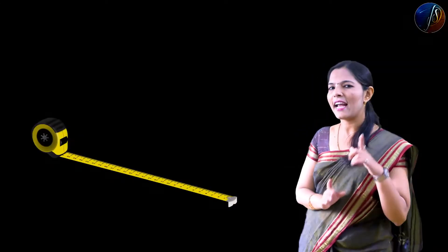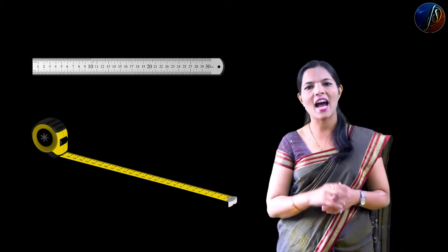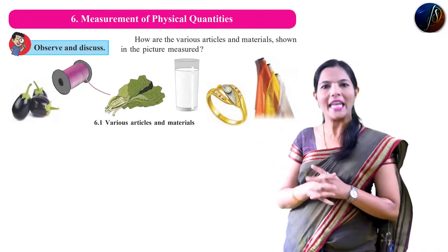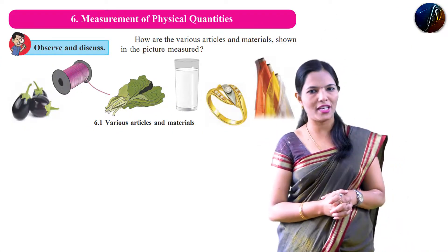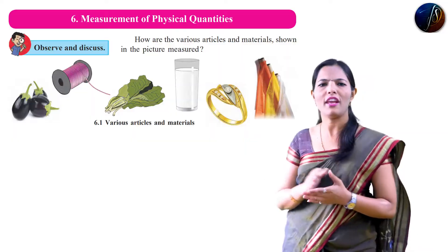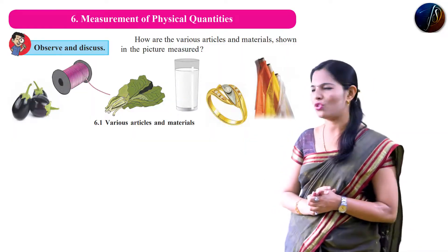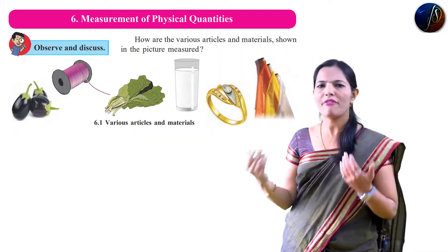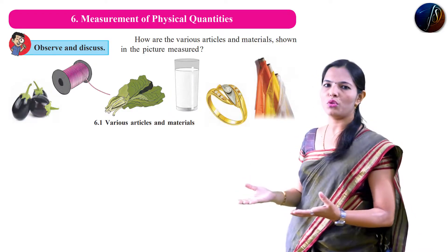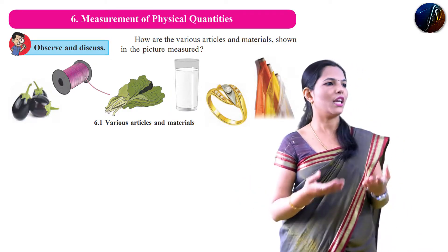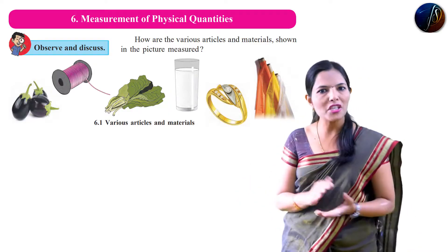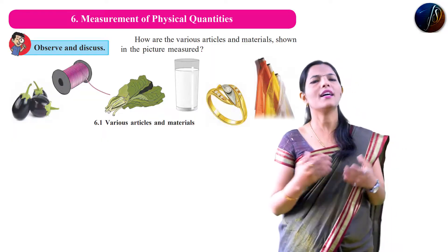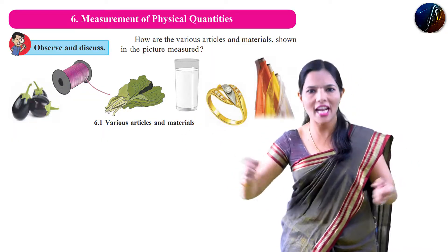So yes, you need to measure that. You can see green leafy vegetables — a bunch of leafy vegetables: spinach, fenugreek, palka, mithi. You don't have to worry about it.